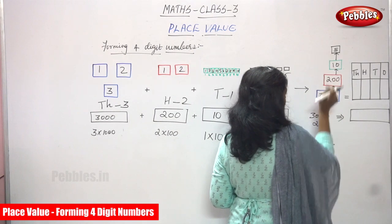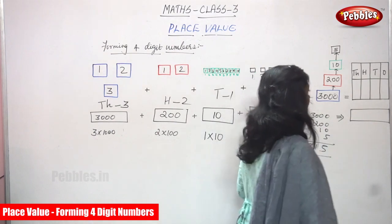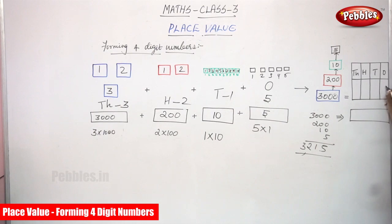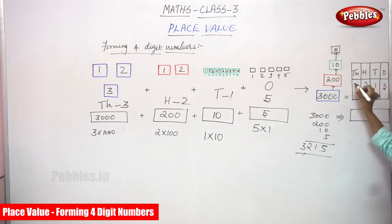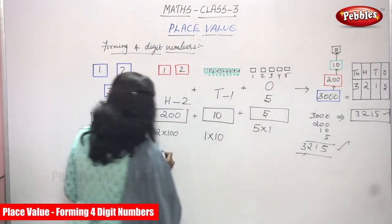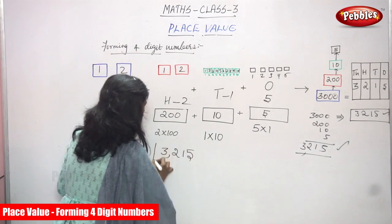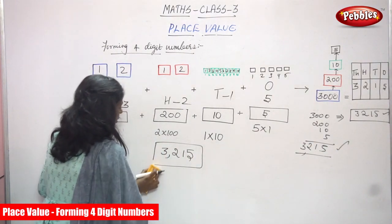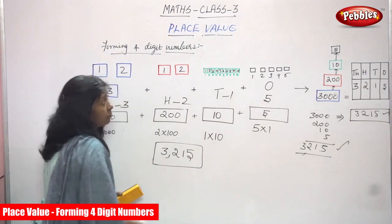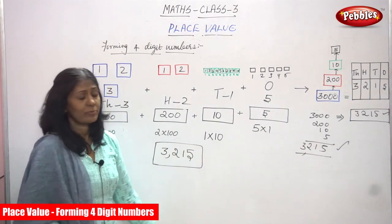Now add everything: three thousand, two hundred, ten, and five. You can form the four-digit number three thousand two hundred and fifteen. In place value, starting from right to left: five ones, one ten, two hundreds, three thousands — the total is 3215. That is the right answer for this question. Now you can form the four-digit number 3215.